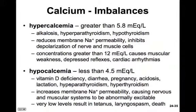Hypercalcemia results from alkalosis, hyperparathyroidism, or hypothyroidism. It reduces membrane sodium permeability and inhibits depolarization of nerve and muscle cells. At concentrations greater than 12 milliequivalents per liter, we see muscular weakness, depressed reflexes, and often cardiac arrhythmias.